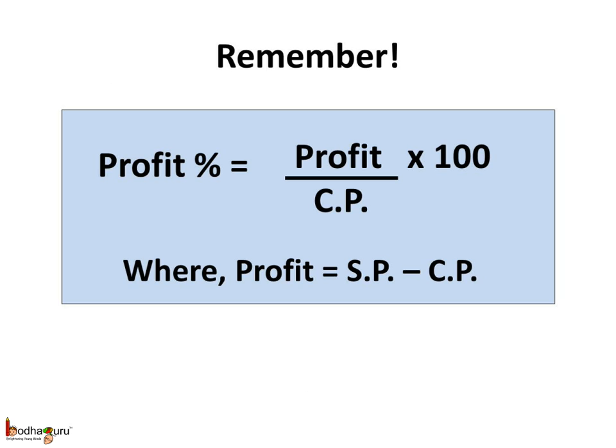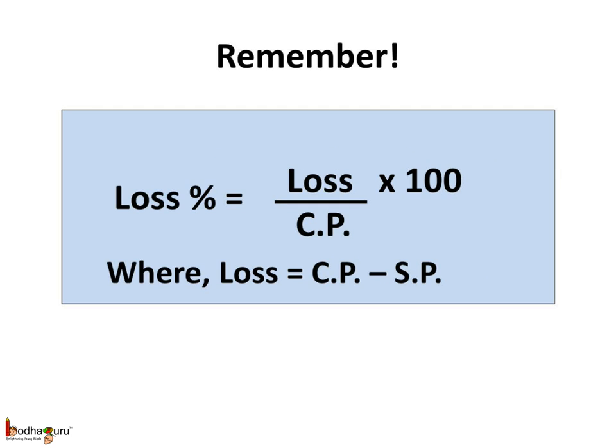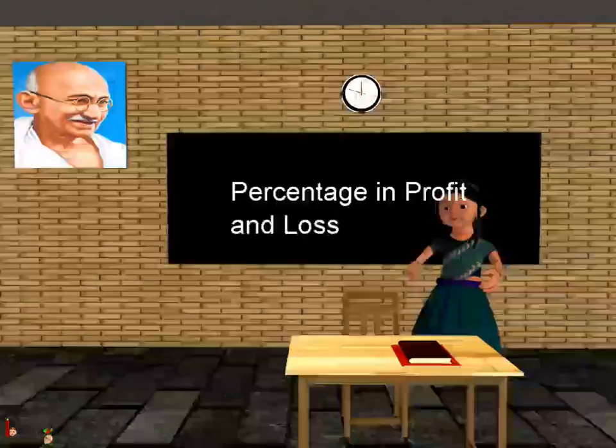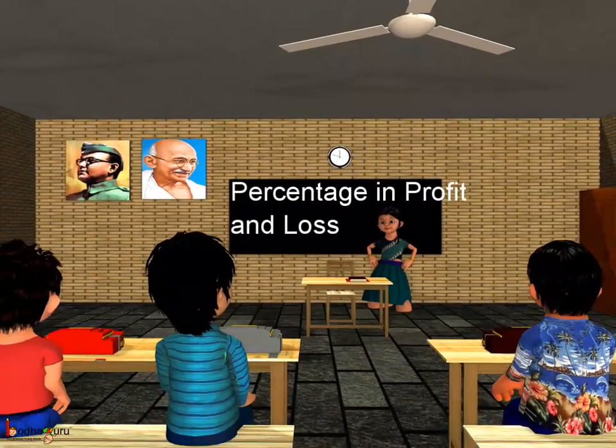So, remember children what we learnt today about profit percentage and loss percentage. Profit percent equals profit divided by cost price multiplied by 100, where profit equals SP minus CP. Loss percent equals loss divided by cost price multiplied by 100, where loss equals CP minus SP. Bye-bye children.